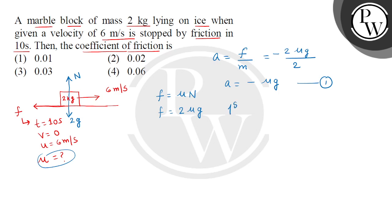Now we apply the first kinematical equation of motion. v equals u plus a t. So v's value is 0. Then u's value is given here, we have 6. A's value is given here, minus mu g times t's value is 10.